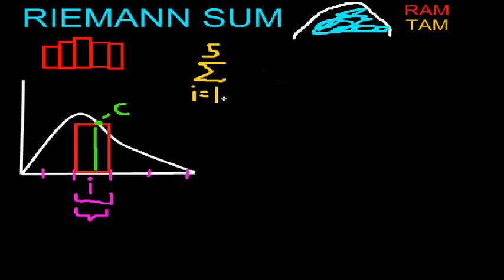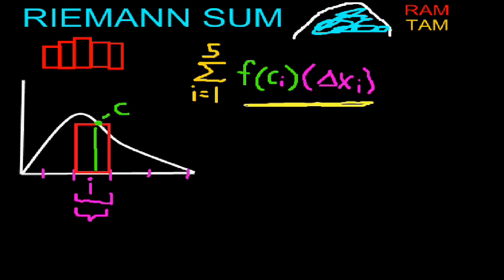So to rewrite this, let's go ahead and put in our height, which is the value of the function at point C. And C, it's important to note, is inside interval I. And we're going to multiply this by the change in X in interval I again. So this is the basic notation for your generic Riemann sum.